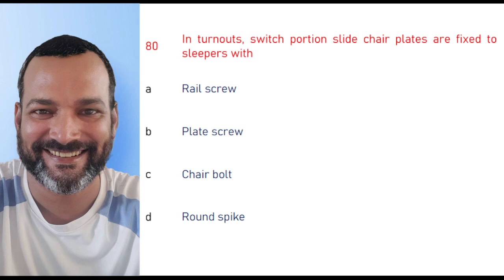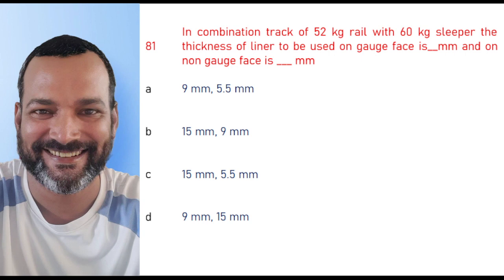In turnouts, switch portion slide chair plates are fixed to sleepers with plate screws. In combination track of 52 kg rail with 60 kg sleepers, the thickness of liner to be used on gauge faces is dash mm and on non-gauge faces is dash mm respectively.